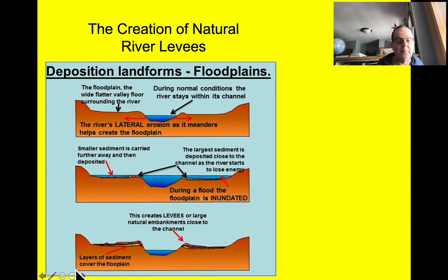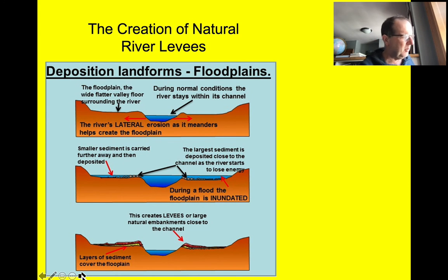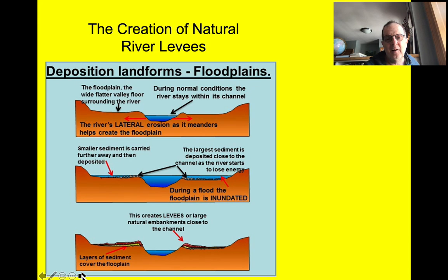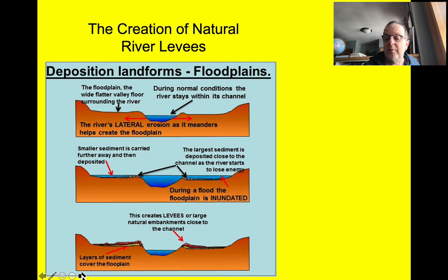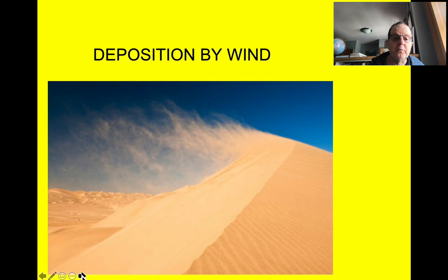The flood plain is an important part of our human heritage. Flood plains were part of the early agricultural riches in the fertile crescent of the Mesopotamian Middle East with the Tigris and Euphrates rivers, and along the Nile, which left behind vast amounts of mineral-rich sediment that was great for plant life and agricultural growth. We can stop there and then we'll do deposition by wind.